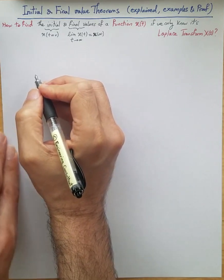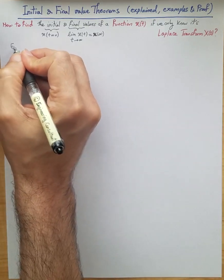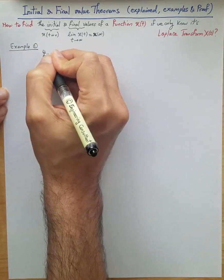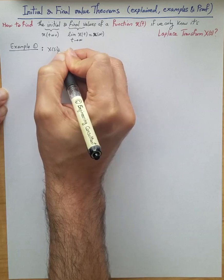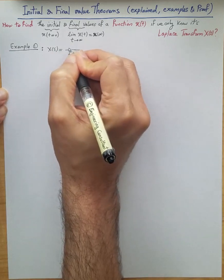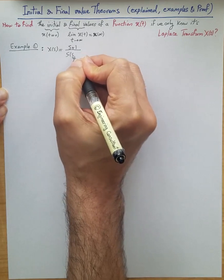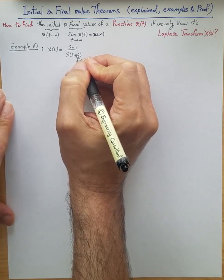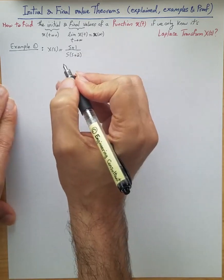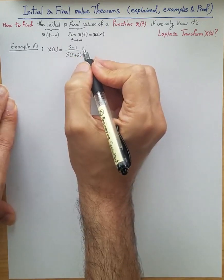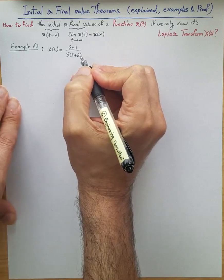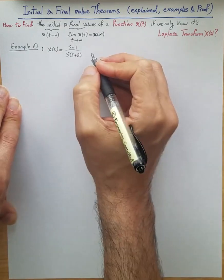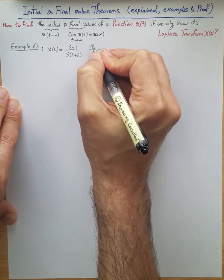Let's start with a few examples. In example one, you're given this simple Laplace transform for a time domain function: x of s is s plus one over s times s plus two in the denominator. Conventionally in a brute force fashion, if you want to find these initial and final values, the first thing you do is figure out the corresponding time domain function using partial fraction expansion.